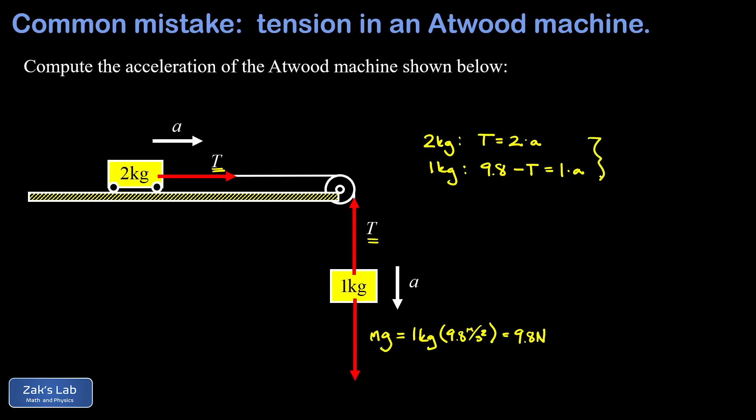This gives us a system of two equations and two unknowns where the tension and the acceleration are the unknowns. And this is set up really nice for elimination. I just add the left sides of the equations and I get 9.8. The T's are canceling out there, T and negative T.